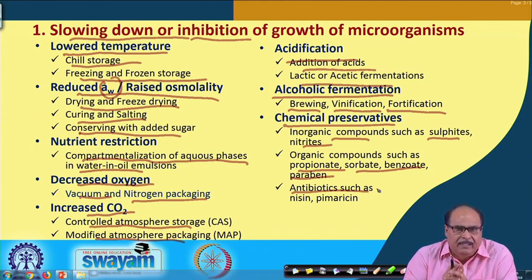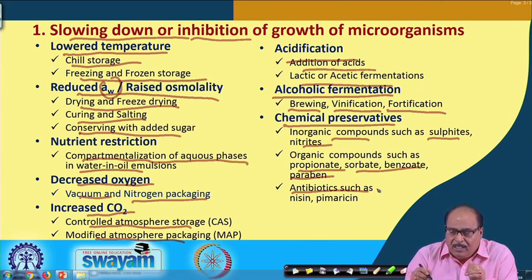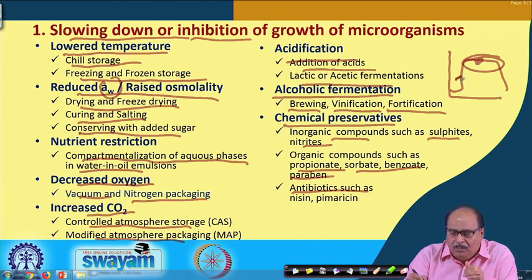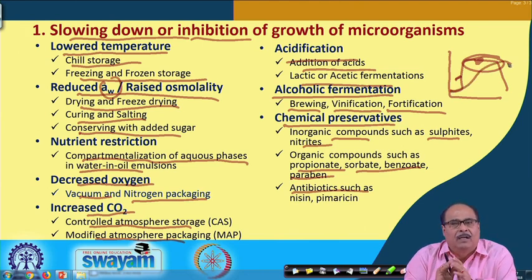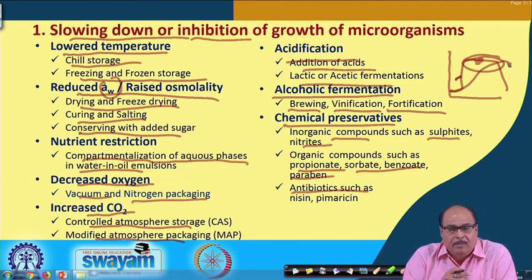One important point is that controlling all these factors does not result in the killing or inactivation of the microorganism. By controlling all these factors, we are just causing the microorganism to go under the stationary phase — either it comes under the stationary phase or the rate of the exponential phase is lowered down. So when these factors are removed and the microorganism finds again a favourable condition, it will grow and multiply.